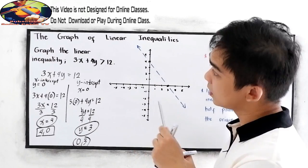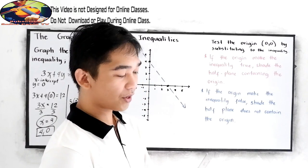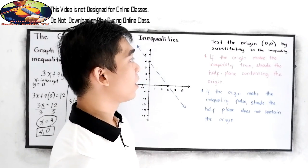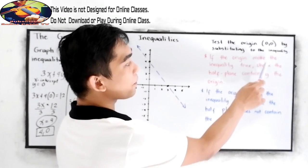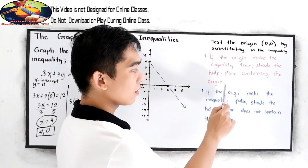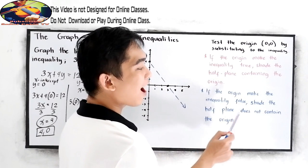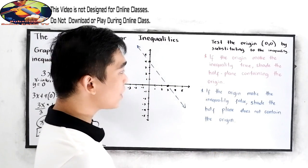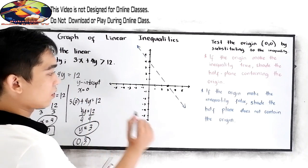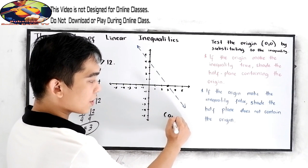In linear inequality, we have this process of testing the origin — the point (0, 0). We need to test our origin. If the origin makes the inequality true, shade the half plane containing the origin. If the origin makes the inequality false, shade the half plane that does not contain the origin.